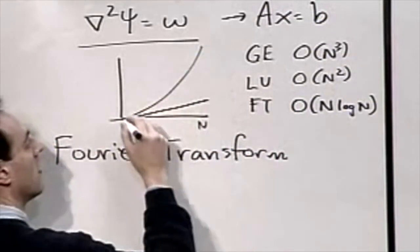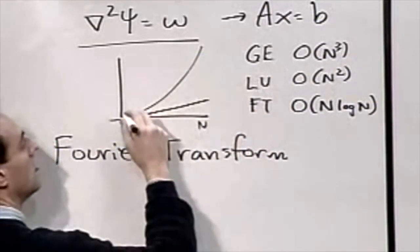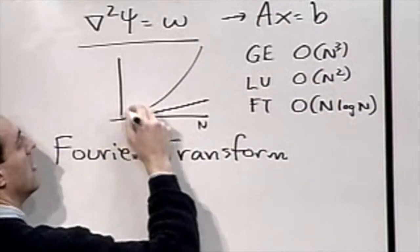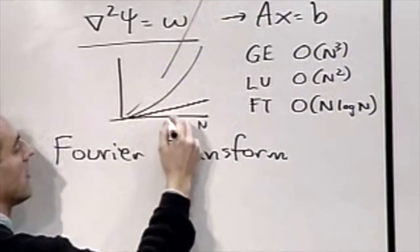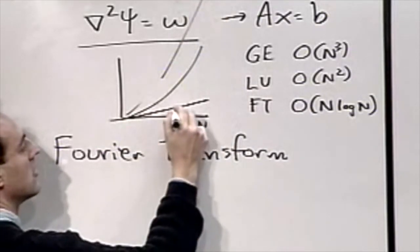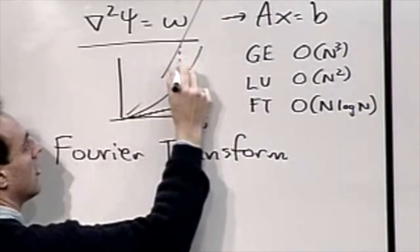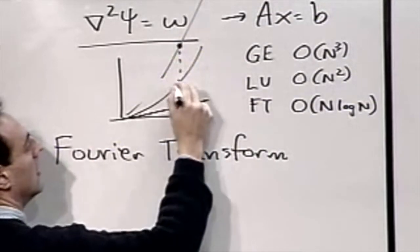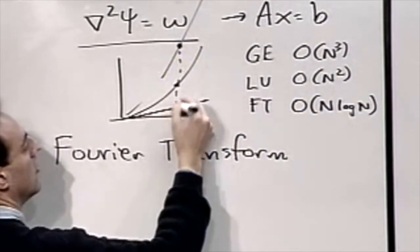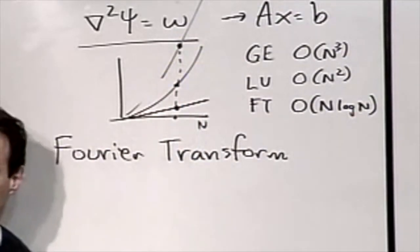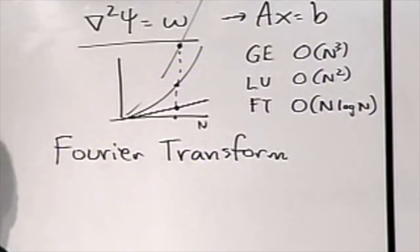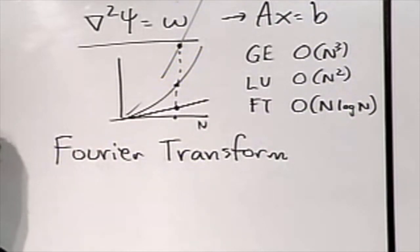When you compare the operation counts: n log n almost grows linearly, LU goes up faster, and Gaussian elimination goes way up. So if you have a large matrix, the Fourier transform is a tremendously fast method — about as fast as you can solve this problem.